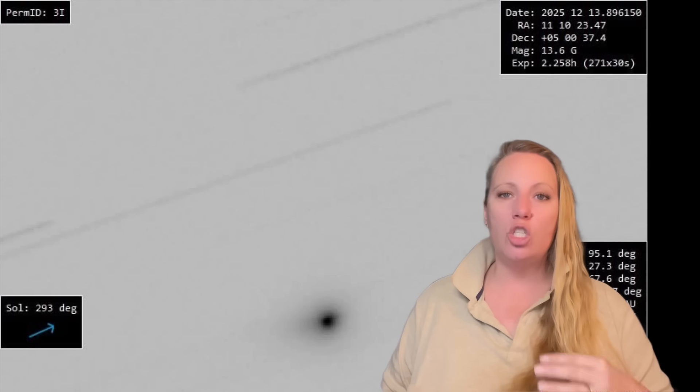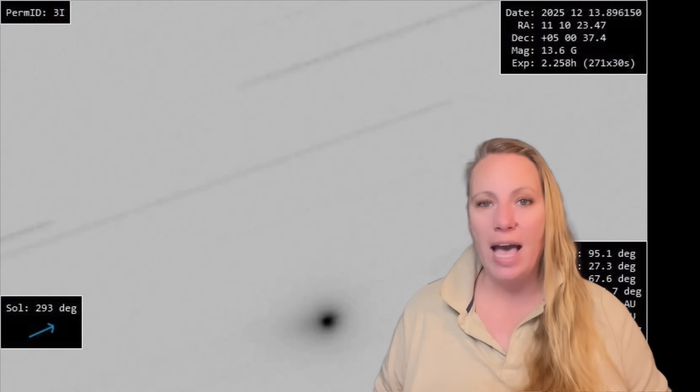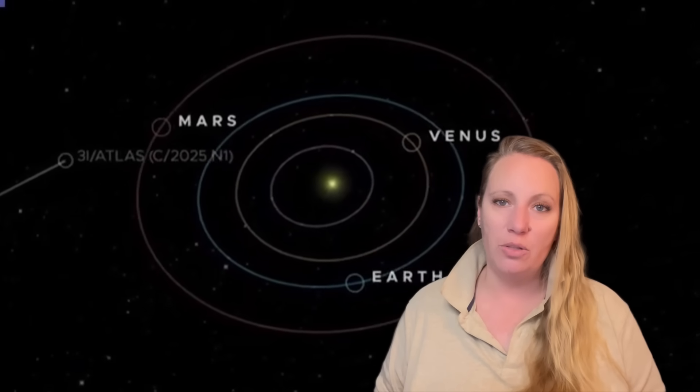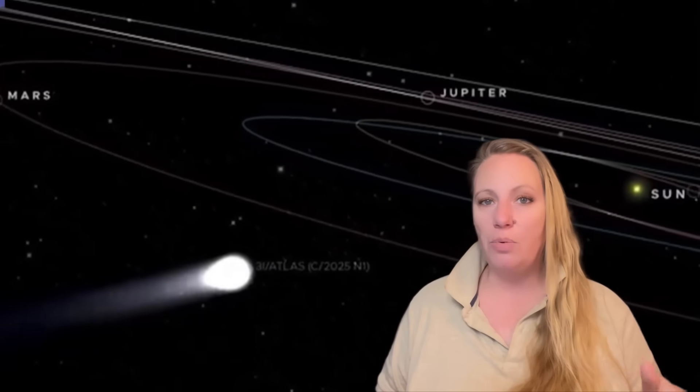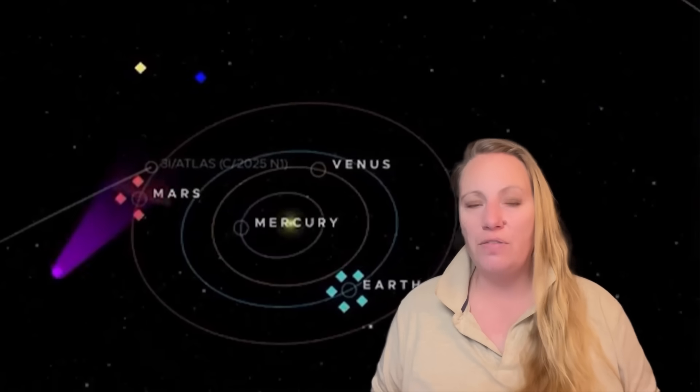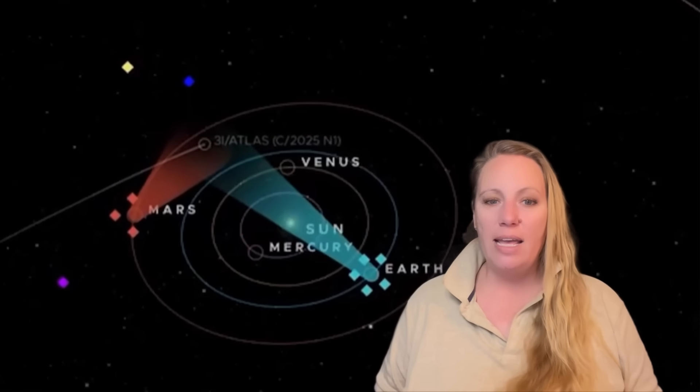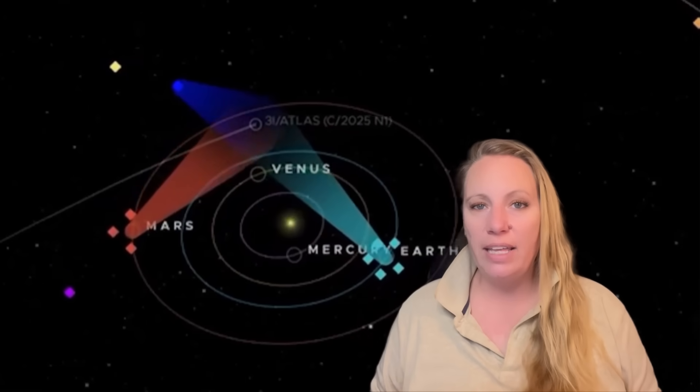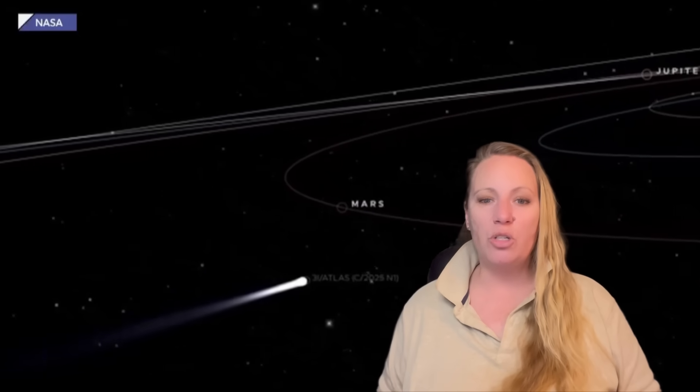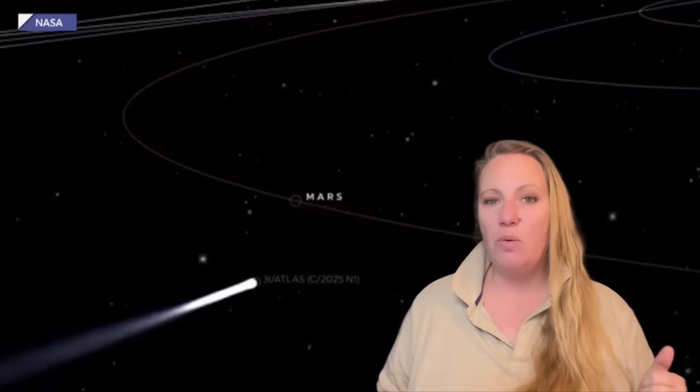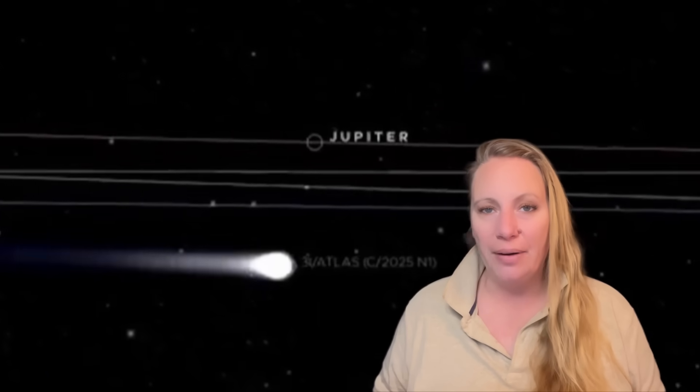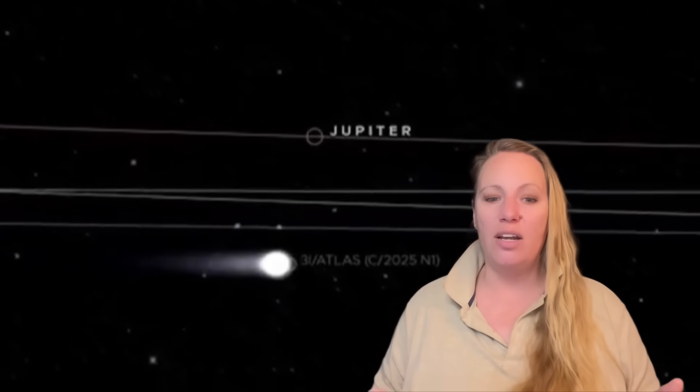But the problem is, 3i Atlas is so incredibly fast, so many times faster than our spacecraft. So the problem is, if you missed the point, we cannot follow it, we cannot reach it. It was traveling at more than 60 kilometers per second, so there was little time to prepare, and it was just not possible.